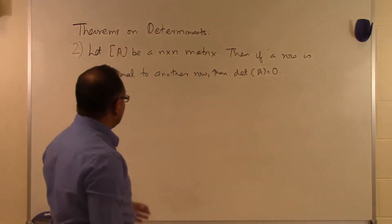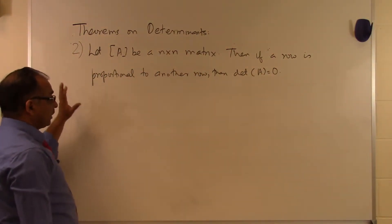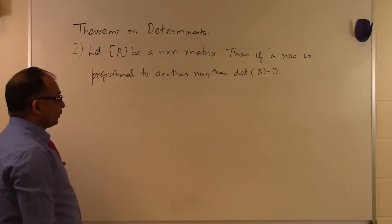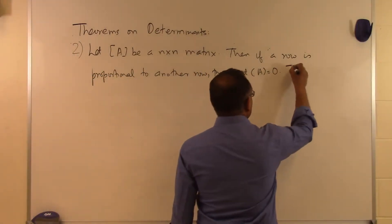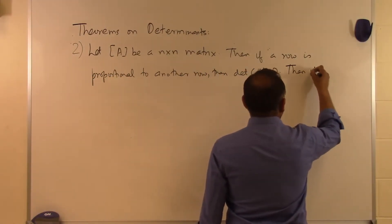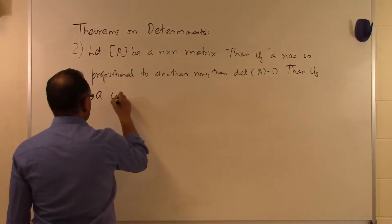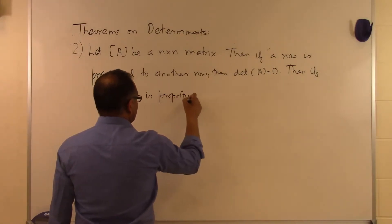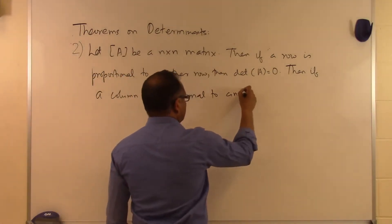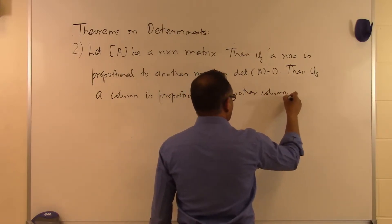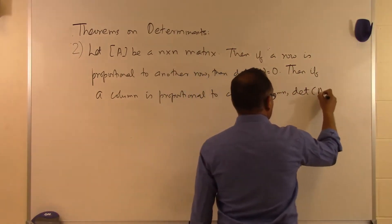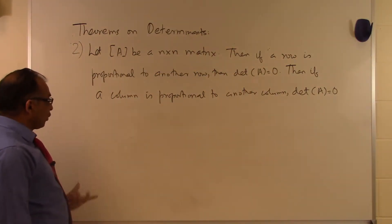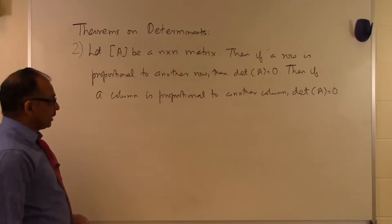If one row is proportional to another row, or a multiple of another row, then the determinant of the whole matrix is zero. This is true for columns also: if a column is proportional to another column, then the determinant of A will also be equal to zero.